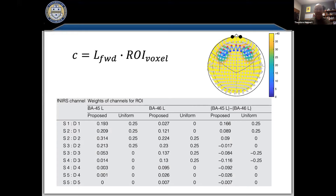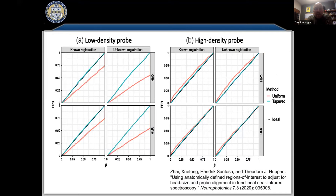Using this tapered weighting, we can adjust for head size, anatomy, and probe positioning. We looked at this in a paper — citation on the bottom right — for both low-density and high-density probes. This mainly affects low-density probes, where blind spots mean the choice of channels and their weights matters greatly. With a high-density probe where you have uniform sensitivity, it matters much less — but most people are still in the low-density realm.